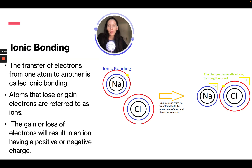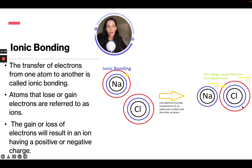Ionic bonding is the transfer of electrons from one atom to another. Atoms that lose or gain electrons are referred to as ions, and the gain or loss of electrons results in a positive or negative charge. In the sodium-chloride example, sodium has one valence electron and one electron from sodium is transferred to chloride, making one cation and one anion. The sodium cation has a positive charge, the chloride anion has a negative charge, and these opposite charges attract to form a bond.